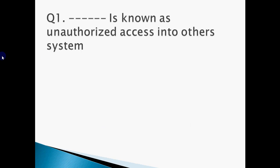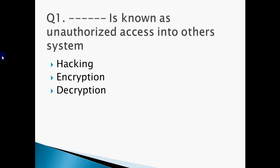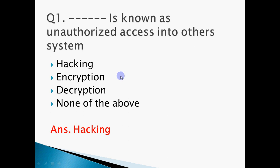First question: dash is known as unauthorized access into others' system without authorization, without rights. The options are hacking, encryption, decryption, or none of the above. Encryption means we convert our text into cipher text — another form — and decryption converts it back to the original form. The answer is hacking: unauthorized access into another system is called hacking.